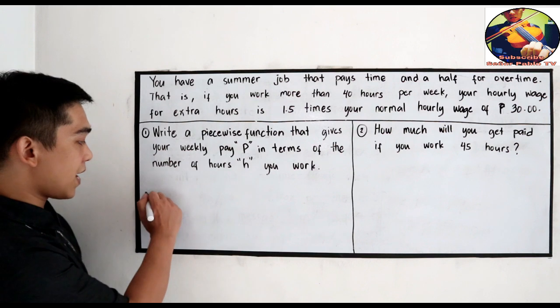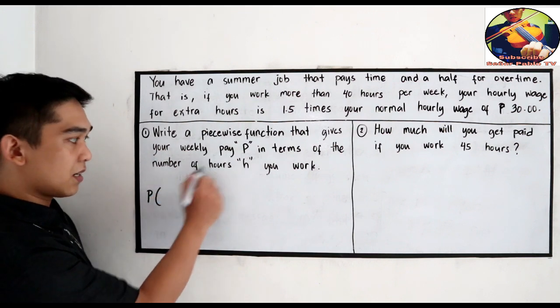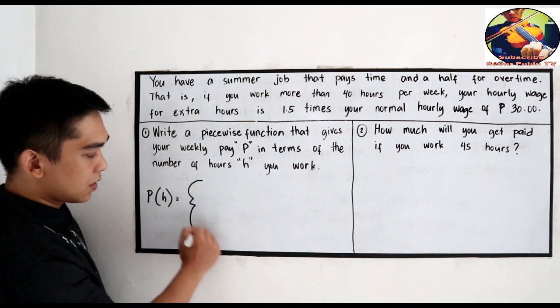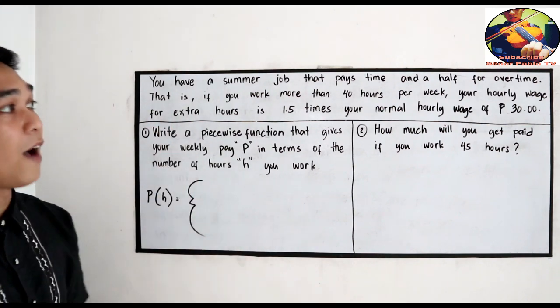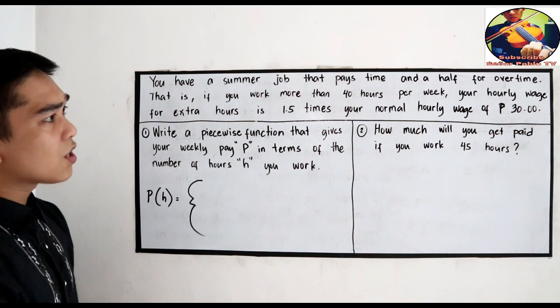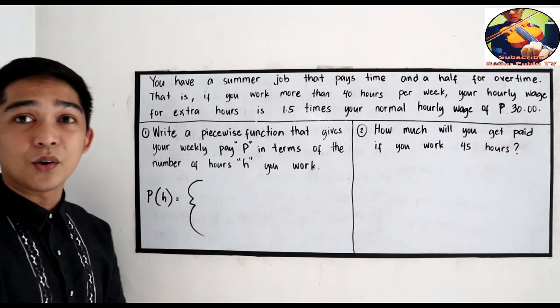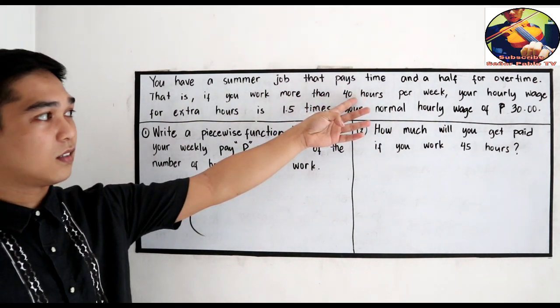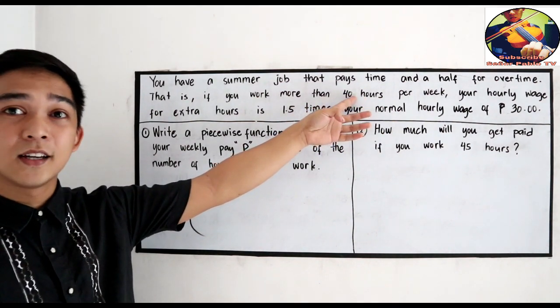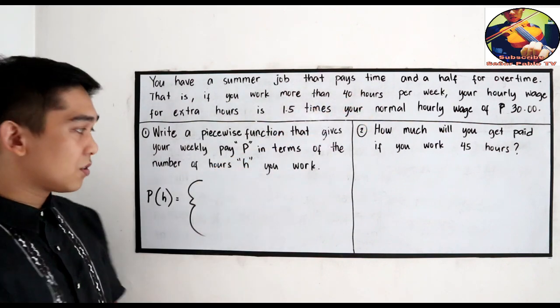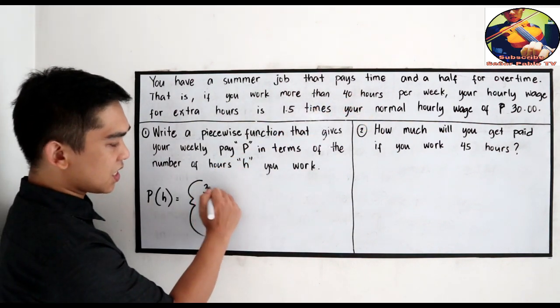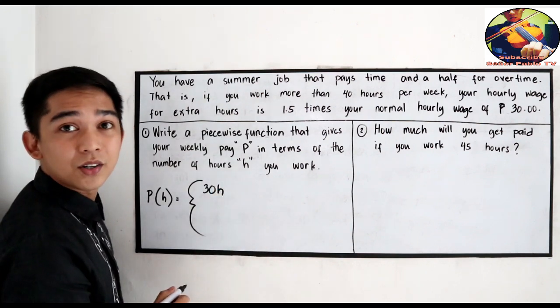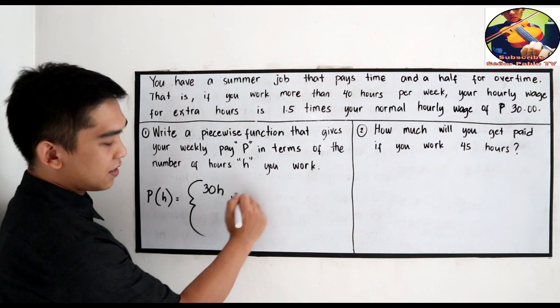The pay per hour is equal to our function. So if you work up to 40 hours, you'll be paid 30 pesos per hour. So 30 times the hours you spend at work.